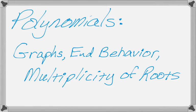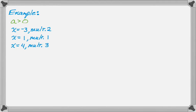In this video we're going to do some examples of graphs and behavior and multiplicity of roots for polynomials. The first thing we're going to do is look at a polynomial where a is greater than 0 — that's the leading coefficient — with x equals negative 3 with a multiplicity of 2, x equals 1 with a multiplicity of 1, and x equals 4 with a multiplicity of 3. We want to create a graph for it.